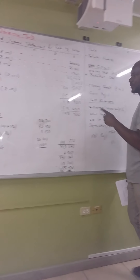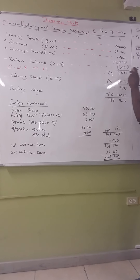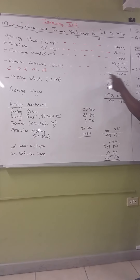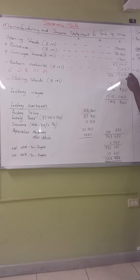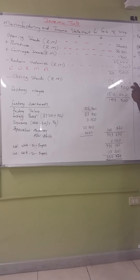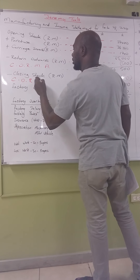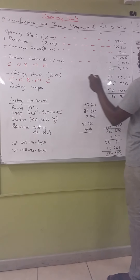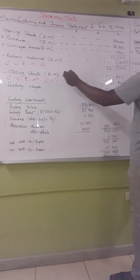Picking up from our cost of raw material available, you subtract your closing stock of raw material, which is 15,300. When you minus 15,300 from 64,500 you get 48,900. This is known as your cost of raw material consumed.